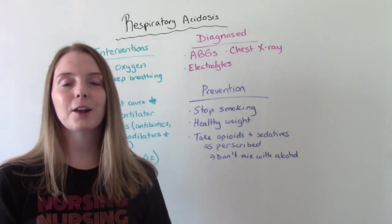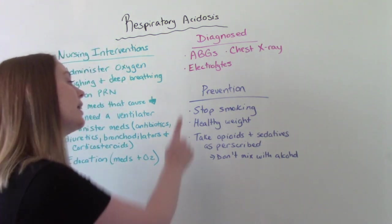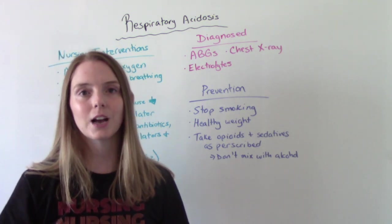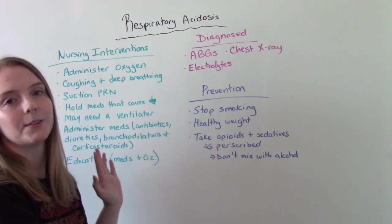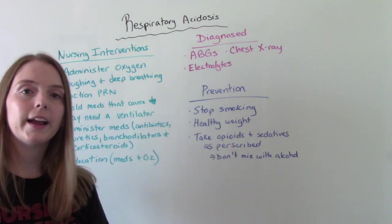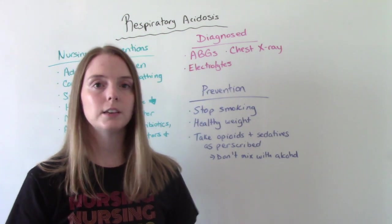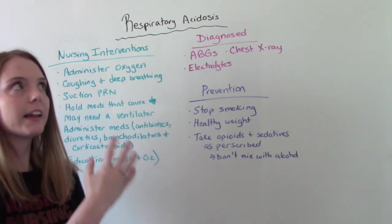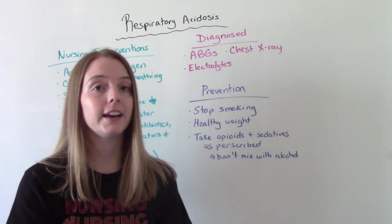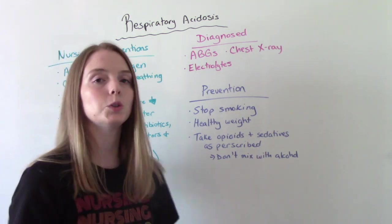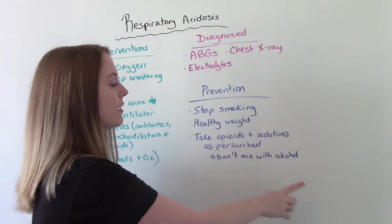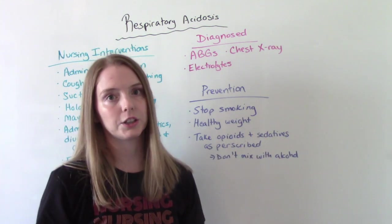Finally, what can we do to prevent this? If your patient is a smoker, encourage them to stop smoking, since smoking causes respiratory issues like COPD that can lead to this. Maintain a healthy weight, since severe obesity was one of the causes we discussed. If the patient is taking an opioid or sedative, make sure they take it as prescribed and safely — and never mix these medications with alcohol, because that can cause respiratory depression.